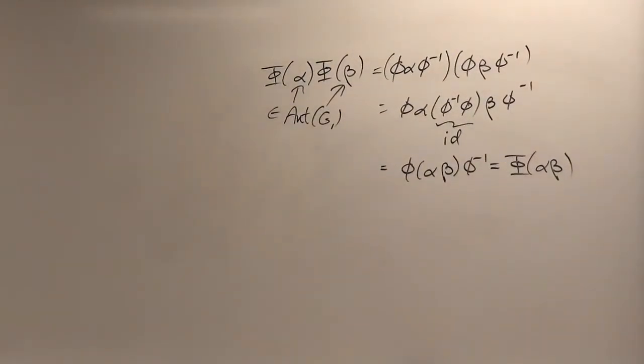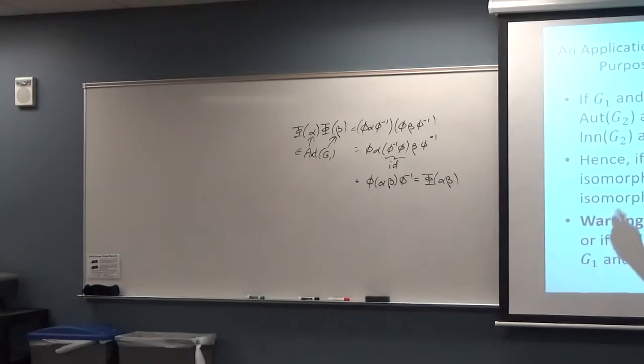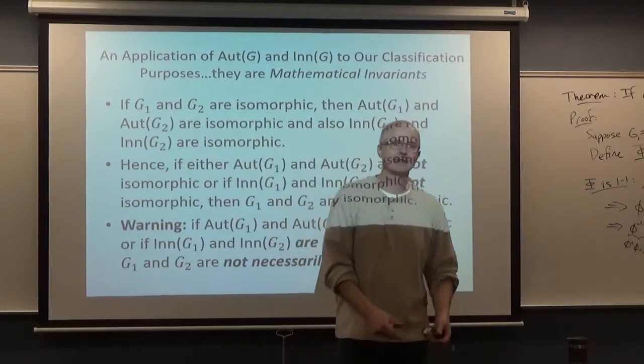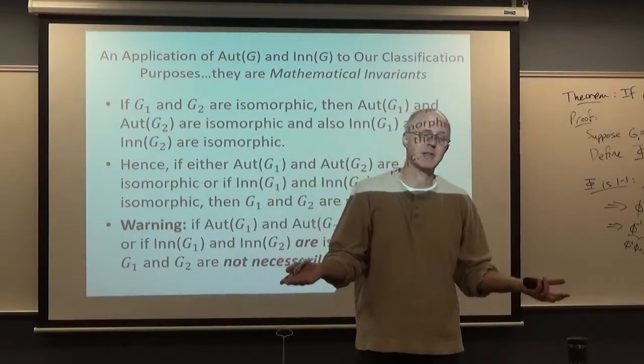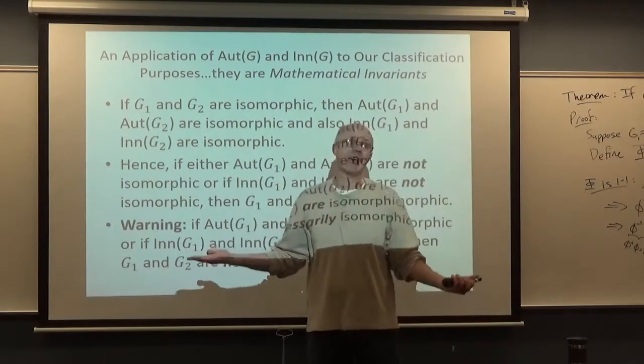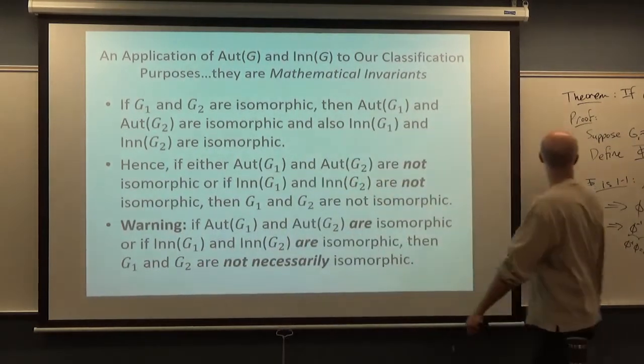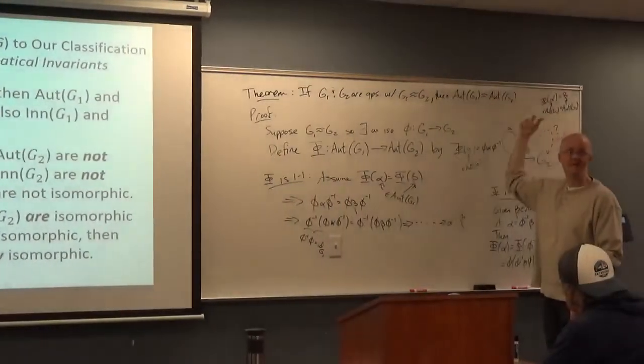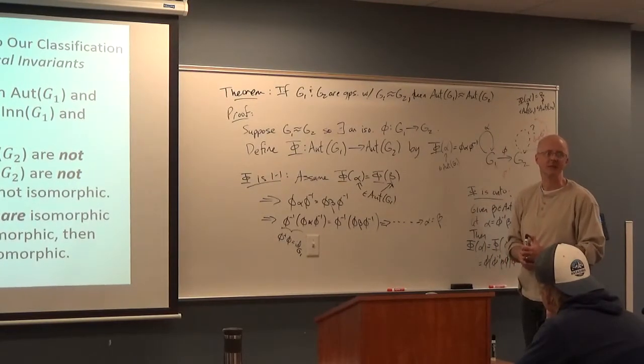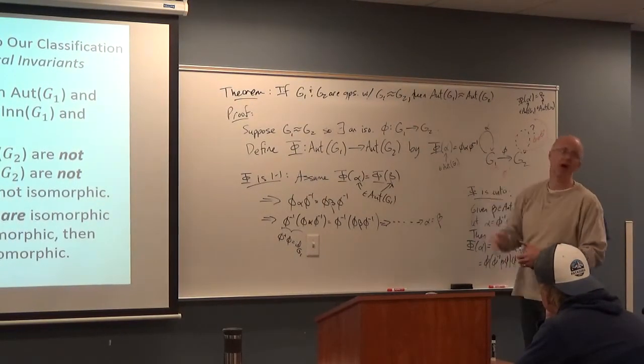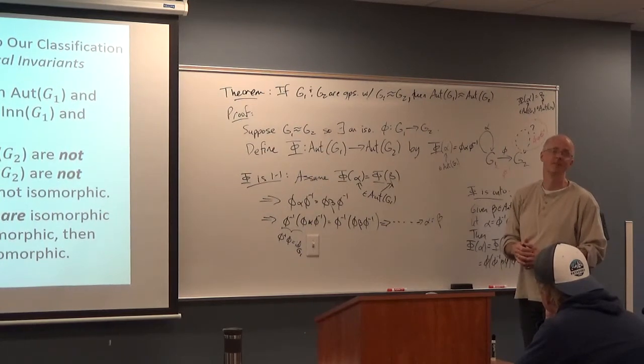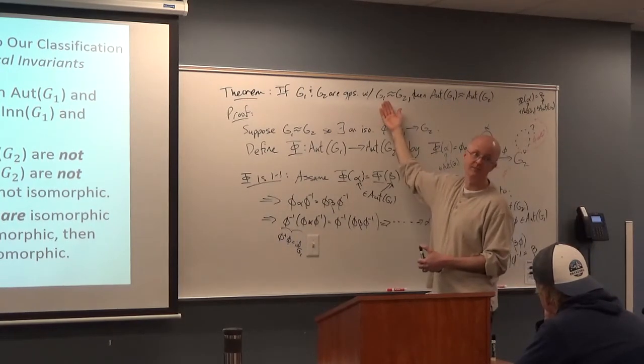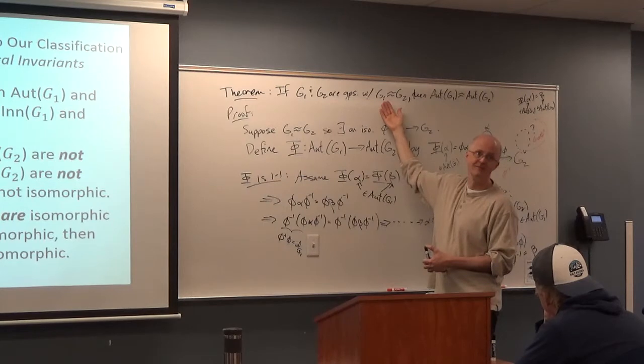This might seem like just a bunch of abstract nonsense. In fact, that phrase, abstract nonsense, actually has a precise definition in math. Anything kind of like this, kind of similar to something called category theory, is sometimes pejoratively called abstract nonsense, even by mathematicians. But it actually does have significance. Okay? We're proving something. We're proving this theorem. And that is an important theorem. Verifying that this Aut idea is a mathematical invariant. Isomorphic groups produce isomorphic groups of automorphisms. And therefore, again, the contrapositive is true. If these are not isomorphic, then these are not isomorphic. Which is a good thing. A good tool to have.